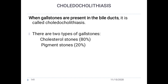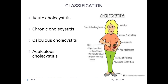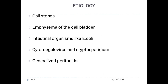Classification of cholecystitis includes: acute cholecystitis, chronic cholecystitis, calculous cholecystitis, and acalculous cholecystitis. Acalculous cholecystitis may be associated with intestinal organisms like Escherichia coli, cytomegalovirus, and Cryptosporidium, and can lead to generalized peritonitis.